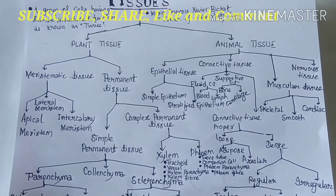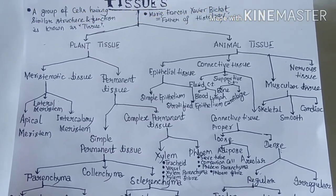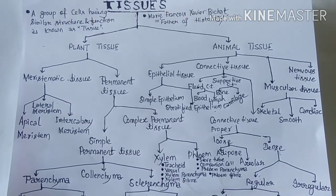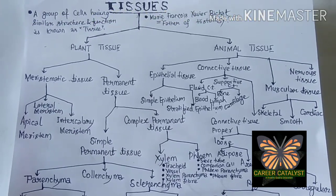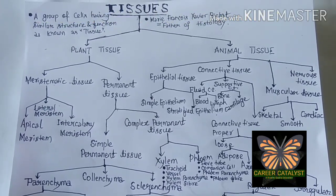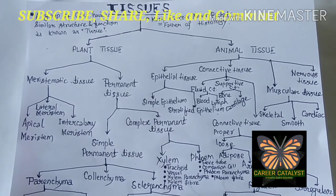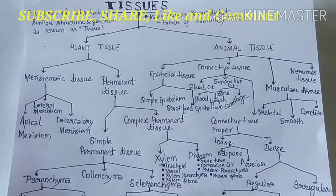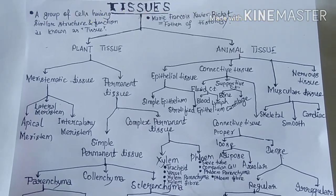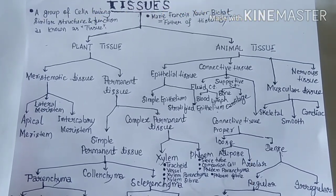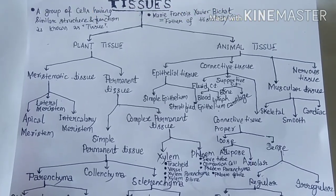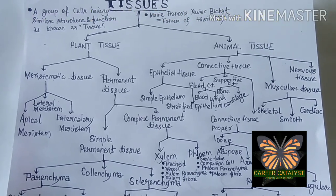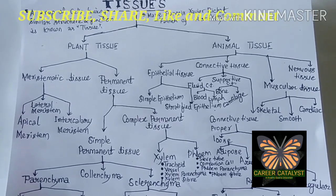Lateral meristem is present at the lateral sides of the plant body. Intercalary meristem is located at the internodal locations and at the position of the leaves.